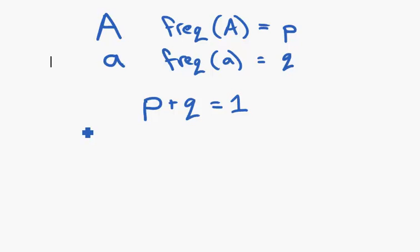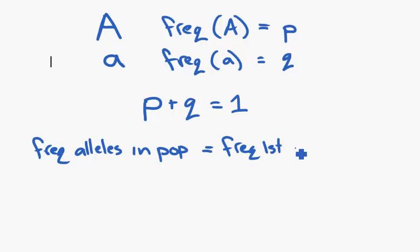As long as we're using a diploid system, normal dominant recessive, this works nicely. So they could then add that the frequency of alleles in the population equals frequency of the first allele times frequency of the second. Of course, we're talking about a system here that is diploid. So you've got two copies of each allele.